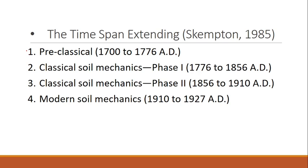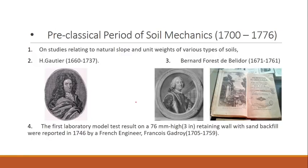The era of geotechnical engineering from 1700 to 1927 can be divided into four major periods: the first is Preclassical, the second is Classical Soil Mechanics Phase 1, the third is Classical Soil Mechanics Phase 2, and the last is Modern Soil Mechanics.